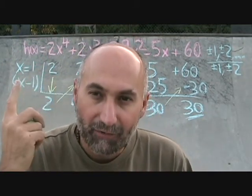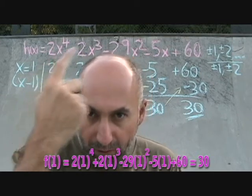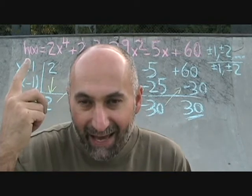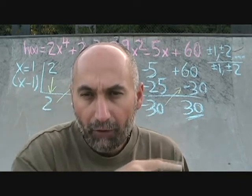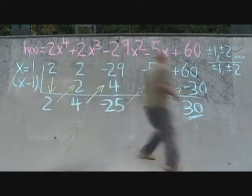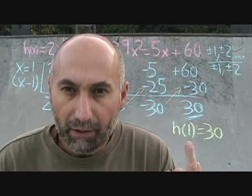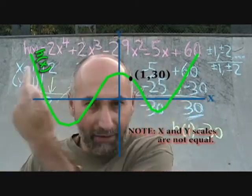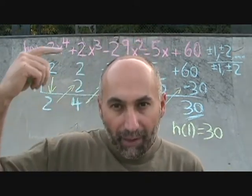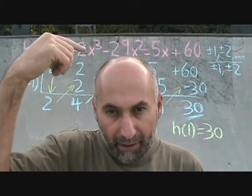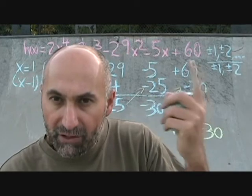What this does mean is if you substitute x equals 1 into the polynomial — 2 times 1 to the power of 4 plus 2 times 1 to the power of 3, and so on — your h of 1, the y-value when x is 1, is going to be 30. So this is really a coordinate we just found for the polynomial: h of 1 equals 30. It's not what we're looking for — we're looking for factors. So we go back to the coefficients and try another possible factor of 60.